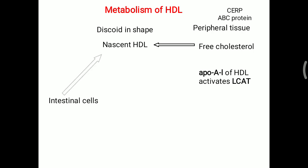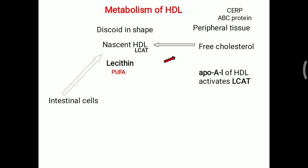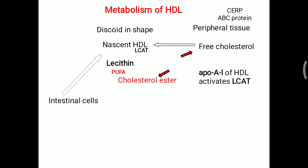LCAT stands for lecithin cholesterol acyl transferase. This enzyme is present over the HDL and is activated by ApoA1. Lecithin, which is also present over the HDL, is a type of phosphatidylcholine. A PUFA — polyunsaturated fatty acid — is present over the second carbon of the phosphatidylcholine. This PUFA will attach to the free cholesterol, converting it into cholesterol ester.